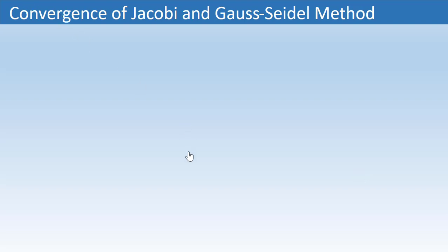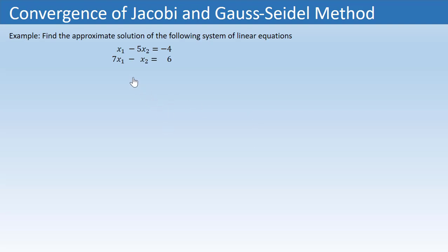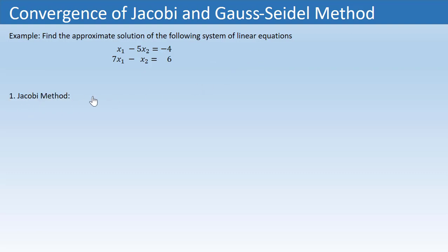In this tutorial we are going to discuss the convergence criteria of Jacobi and Gauss-Seidel method. We have a 2x2 square system whose exact solution is x1 = 1 and x2 = 1. Let's try to solve this system using Jacobi method. Here is the corresponding iterative scheme.